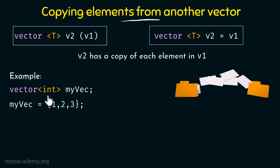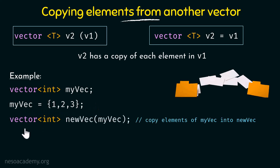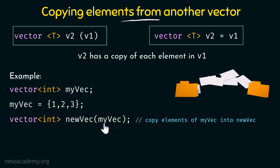Here we have a vector of the type integer called myvec and we assign some integer values — 1, 2, 3. Then we define a new vector called newvec, also of type integer, and within parentheses specify myvec. This means we are copying all the elements of myvec into newvec. So we have applied this copy syntax in this example.